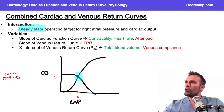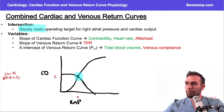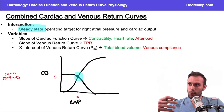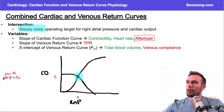The slope of the cardiac function curve is going to go up with increased contractility — it's proportional to contractility. It's also going to go up with increased heart rate, proportional to heart rate. And it's going to go down when the afterload goes up — inversely proportional. When the afterload goes up, the slope of the cardiac function curve goes down.